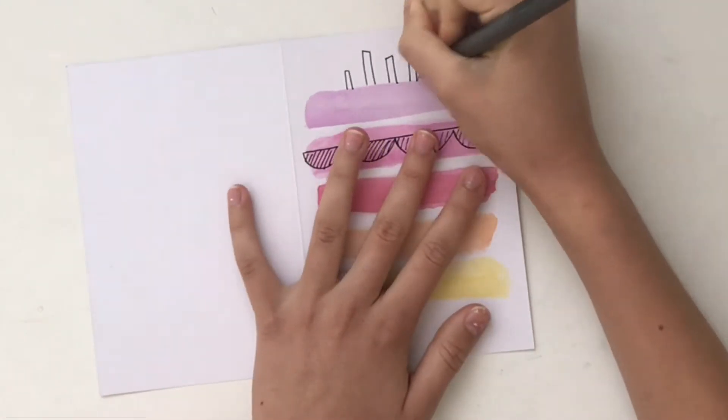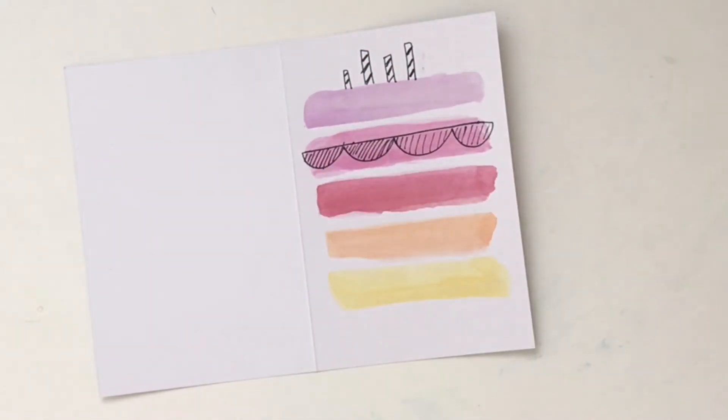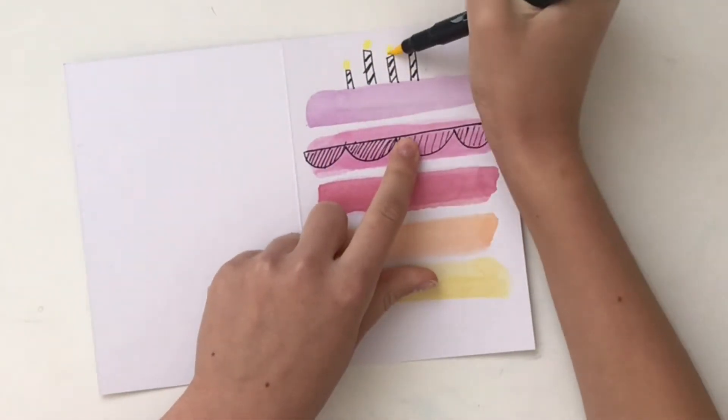I know I said we were only going to use the supplies I said at the beginning, but I forgot to do the flame of the candles with watercolor, so I went in with my yellow felt tip.